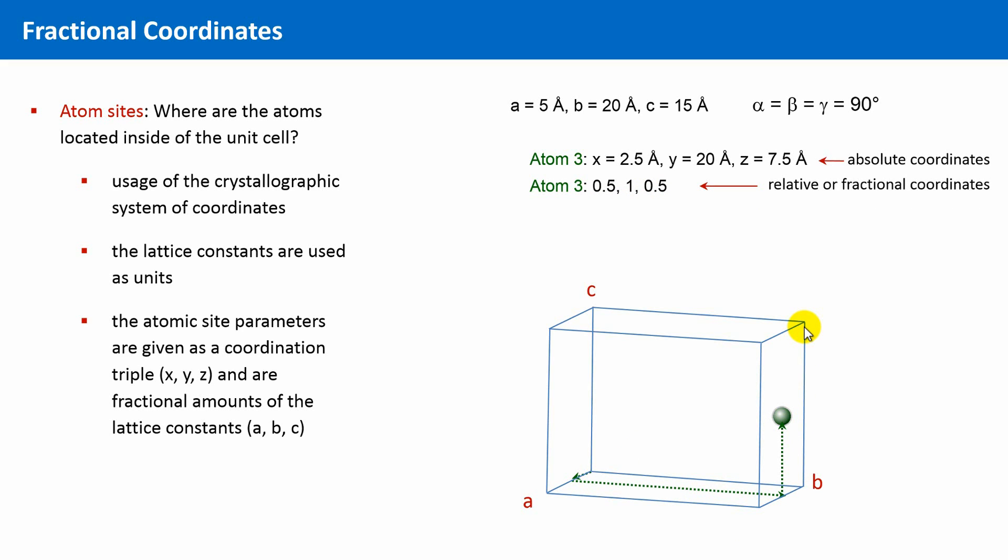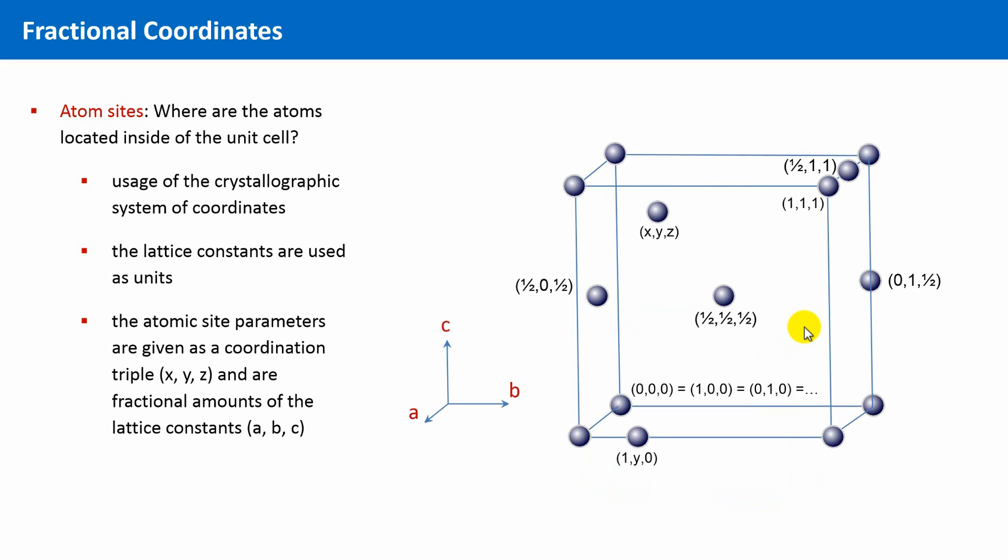This concept can be generalized. And this is shown here in an overview. Any coordination triple in which we have only 0s or 1s must correspond to an atom at the corner of the unit cell.